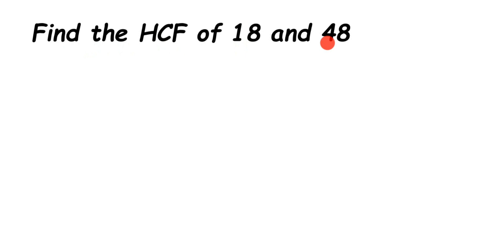What we're going to do is prime factorize both numbers separately, take out the factors, then take out the common factors, and multiply them.